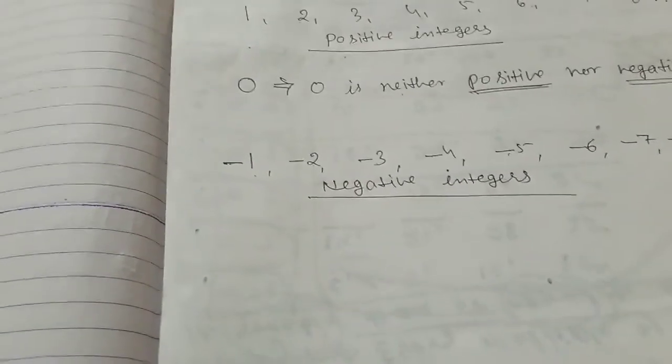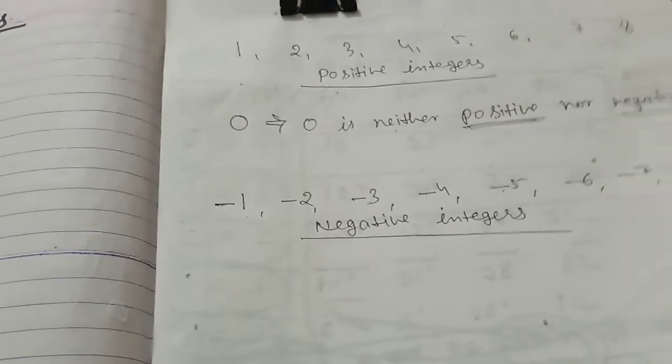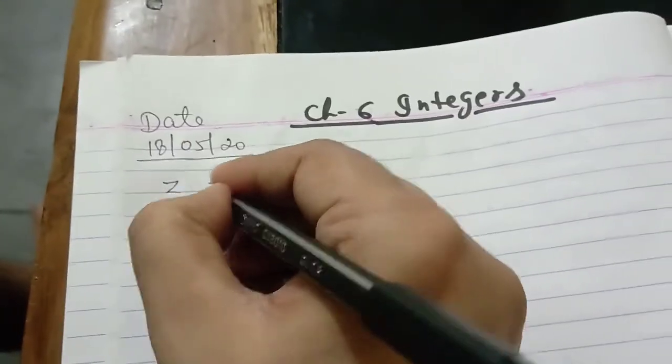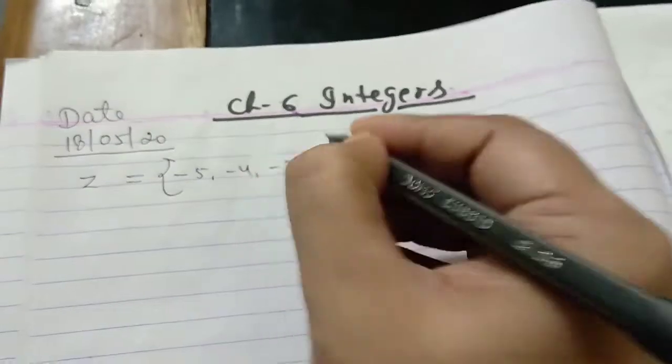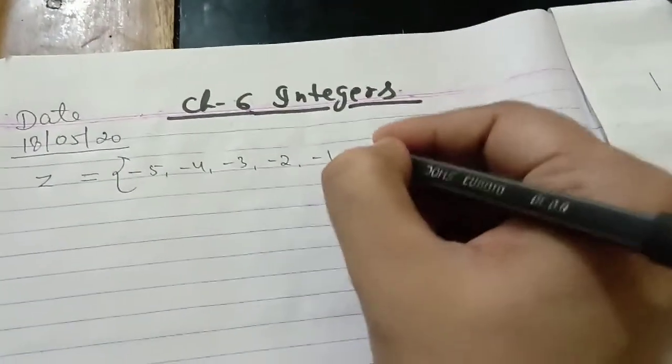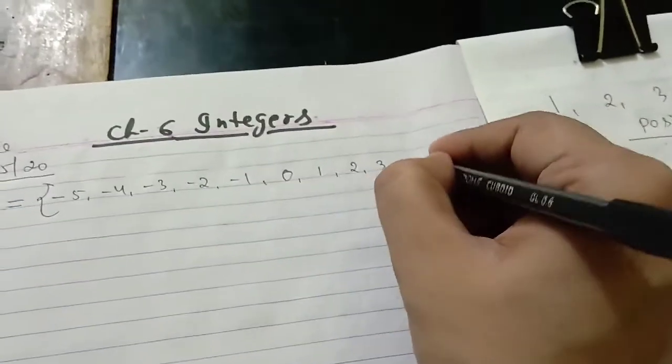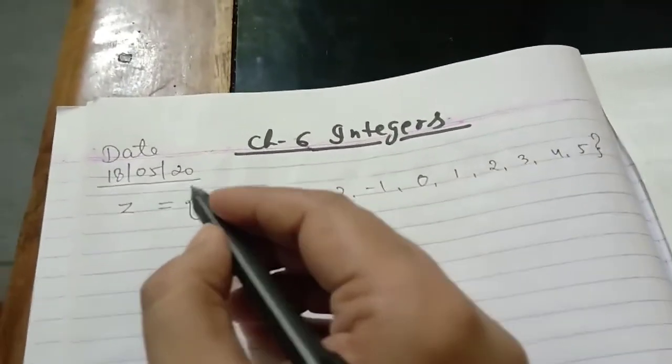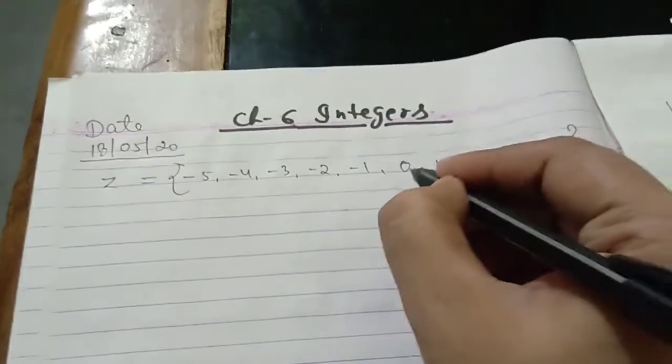So the set of these new numbers are called integers. Now, it can be represented like this way: minus 5, minus 4, minus 3, minus 2, minus 1, 0, 1, 2, 3, 4, 5. So integers are the collection of positive numbers and negative numbers and 0.